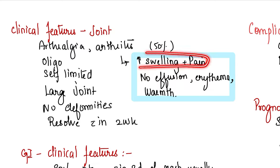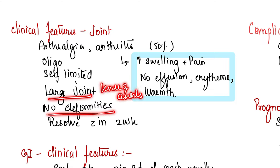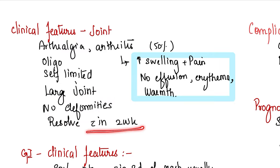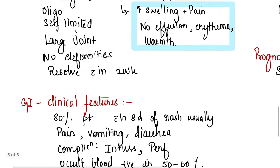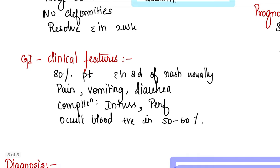Joint involvement is seen in 50 percent of Henoch-Schonlein purpura patients. It could be just pain or arthritis. And in arthritis, it is more of a swelling and pain rather than effusion, redness, or warmth. Remember this point. It's oligoarthritis, meaning less than or equal to four joint involvement. It is self-limited, does not cause lasting damage. Large joint involvement, predominantly knees and ankles. There are no deformities. It resolves spontaneously by two weeks.